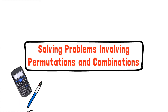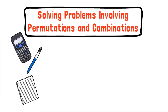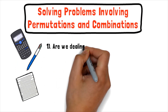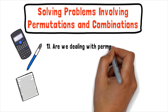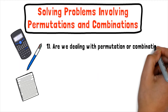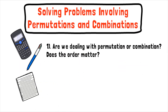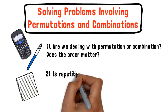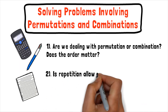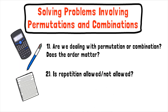Before jumping into solving problems involving permutations or combinations, you need to ask yourself the following questions. First, are we dealing with a permutation or combination? In other words, does the order matter? After you have identified whether the problem is permutation or combination, you need to ask yourself: is repetition allowed or not allowed?